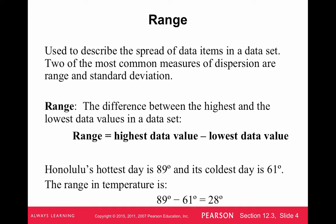So the range is really simple. It's really just to describe how wide the data set is, and to do that you just take the largest or the highest data value and you subtract the lowest data value, and that tells you how wide the data set is. So it says, Honolulu's hottest day is 89 degrees, and its coldest day is 61. The range in temperature is 28 degrees.